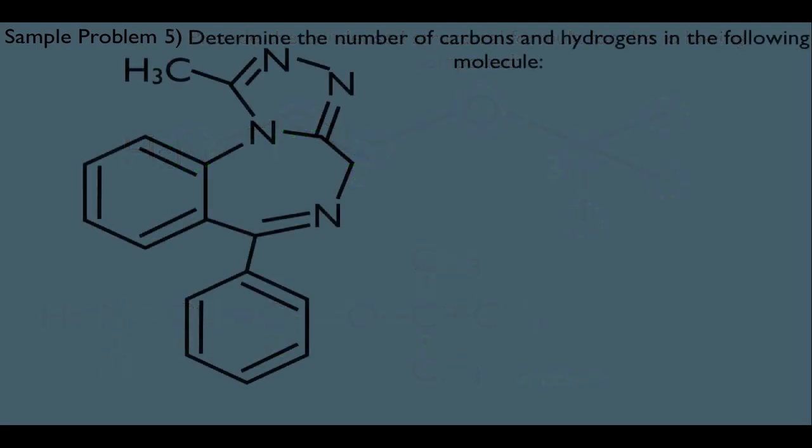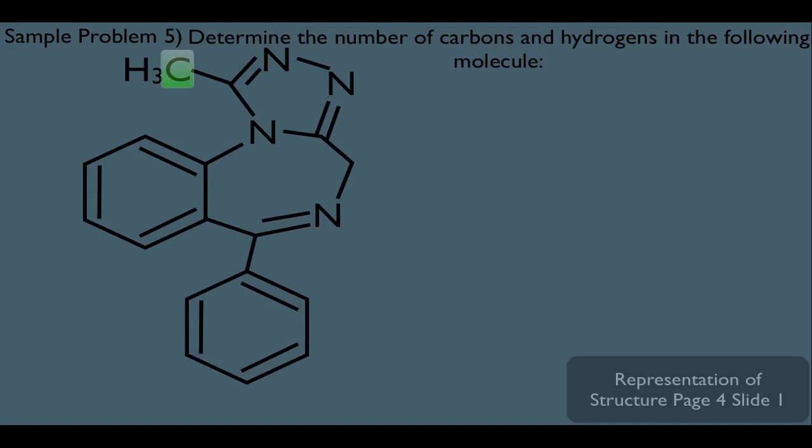Let's look at another sample problem here. Notice the complexity of this molecule right here — these are typical molecules in organic chemistry. So as you can see, the bond-line format definitely comes in handy for big molecules like this. But let's make sure we can interpret these molecules. What they're asking us here is to determine the number of carbons and hydrogens in the following molecule. This is one carbon right here, and he has three hydrogens connected to him. This right here is a bend point — we would interpret that as a carbon. And notice he's doubly bonded to the nitrogen above — that's two bonds. He's singly bonded to the nitrogen below — that's another bond — and he's also bonded to the CH3 group. That's a total of four bonds, so that means this carbon has no hydrogens connected to him.